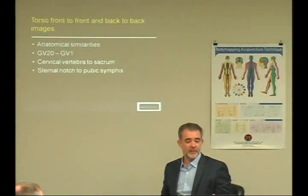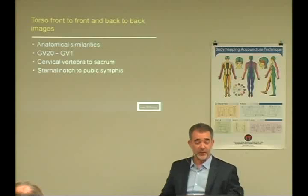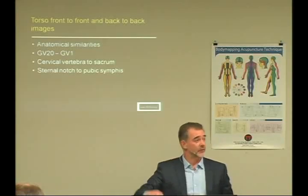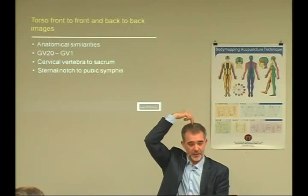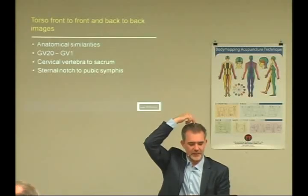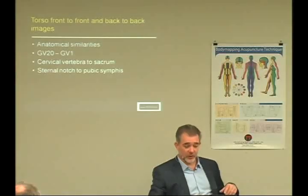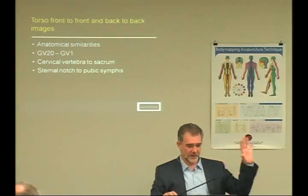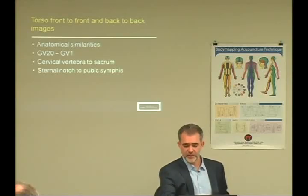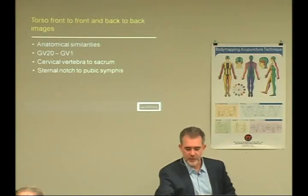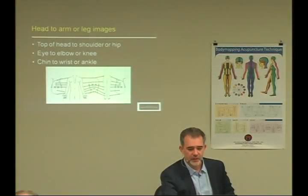Here's front-to-back and back-to-back. Now we're talking about anatomical similarities. GV-20 and CV-1 are going to relate to each other. The cervical vertebrae treat the sacrum. The sternal notch and pubic symphysis relate. GV-1 and CV-1 relate. This is where I start drawing. Let me draw it out.